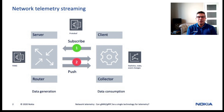There are different implementations of streaming information from network devices. For the purpose of this video, we will focus on the gRPC implementation, which is the Google Remote Procedure Call. This implementation leverages gRPC on the client or collectors and gRPC on the router to subscribe and stream data from the router to one or multiple collectors. The gRPC streaming requires a subscription between the collector and the router to initiate and maintain a connection and to provide enough details on what type of information to stream.